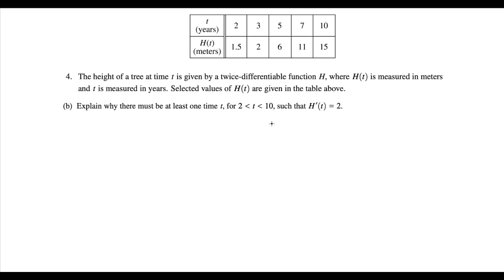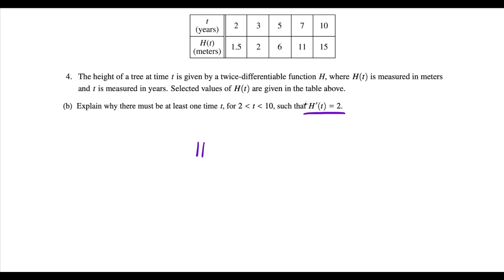For part B, we're going to use the mean value theorem. The giveaway is that we have to explain why h prime equals two at some point between two and ten. If it were the intermediate value theorem, they would say something like 'explain why there's a value t such that h of t equals eight.' But since we're talking about h prime, it's definitely the mean value theorem.